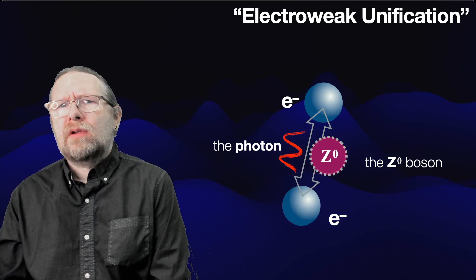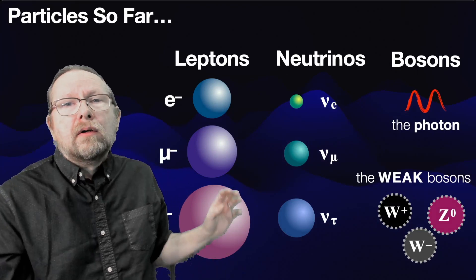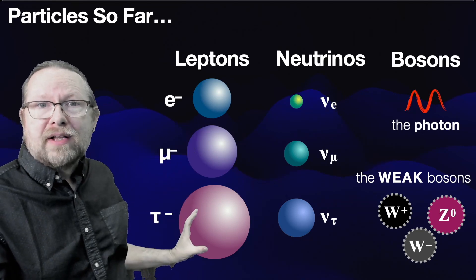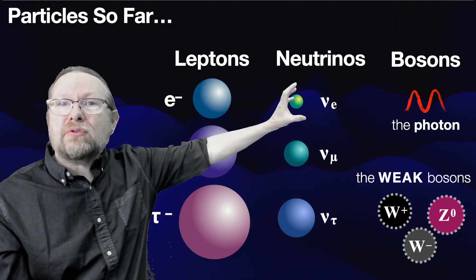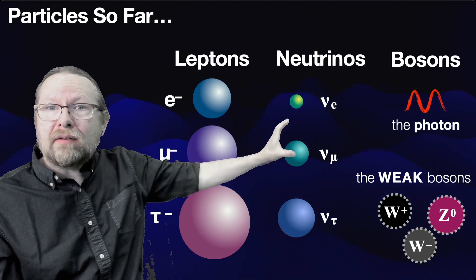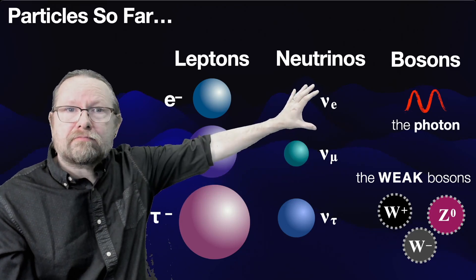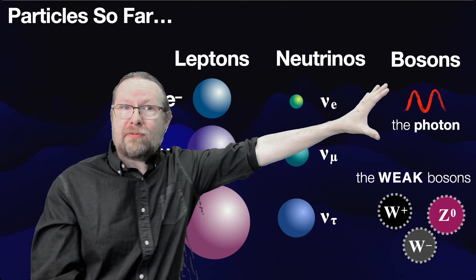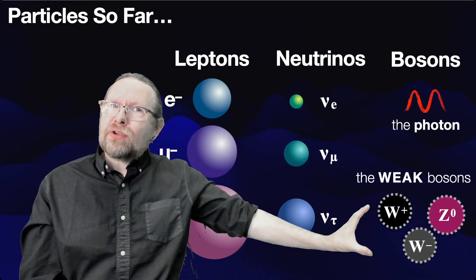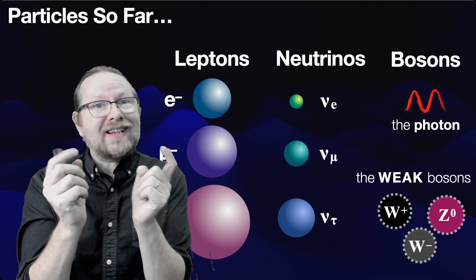Where are we now in our discussion of particles in the universe? We've got matter particles: the leptons — electrons, their heavier friends, and their antiparticles — and the neutrinos, which are electrically neutral so they don't feel the electrical force, but they do feel the weak force, along with the muon neutrino and the tau neutrino. We've talked about the forces between these particles: the electromagnetic force, governed by exchange of virtual photons, and the weak force, governed by exchanges of W and Z bosons — weak bosons that have mass.